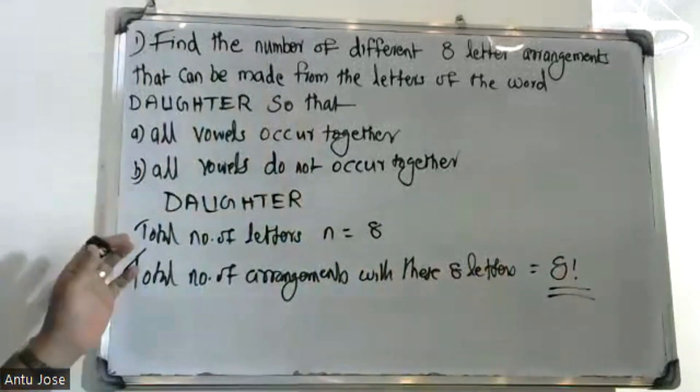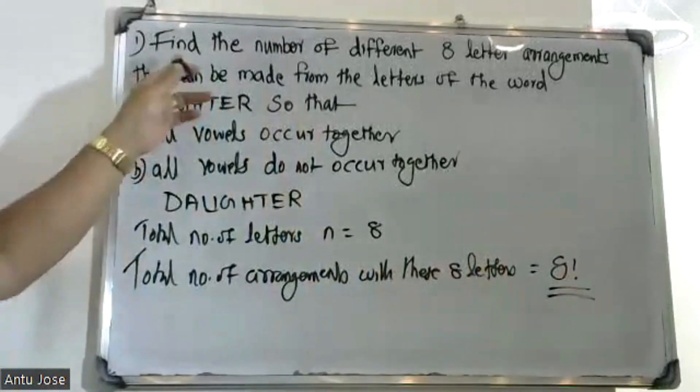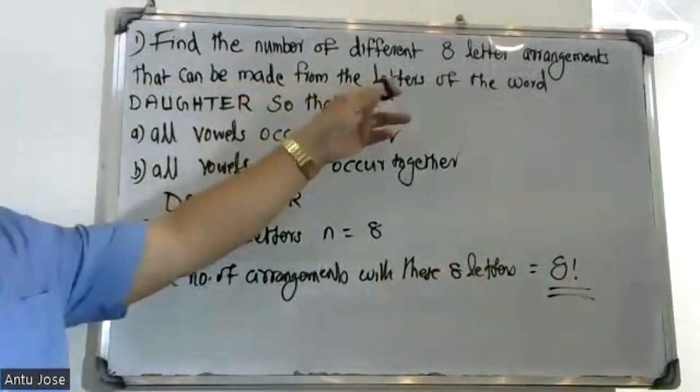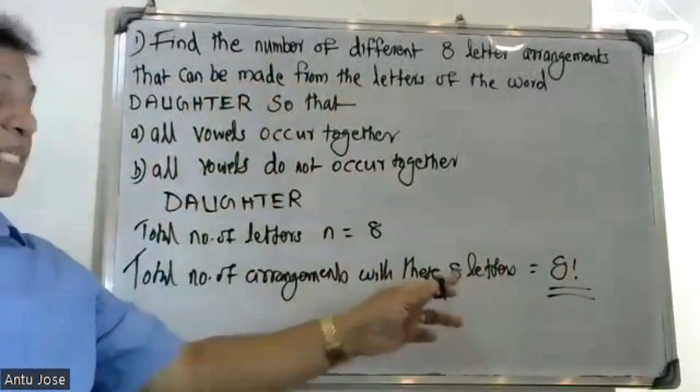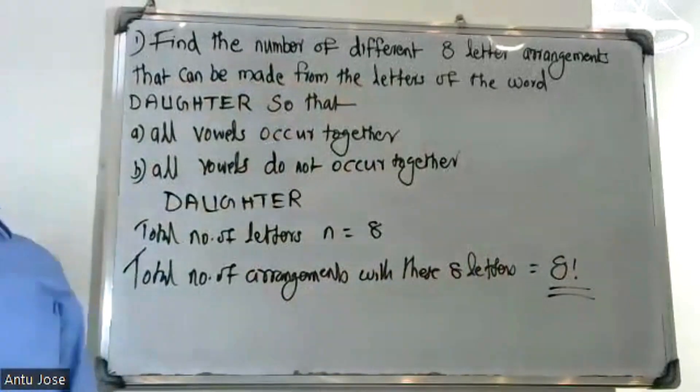The first question answer: the number of different eight-letter arrangements is 8 factorial.